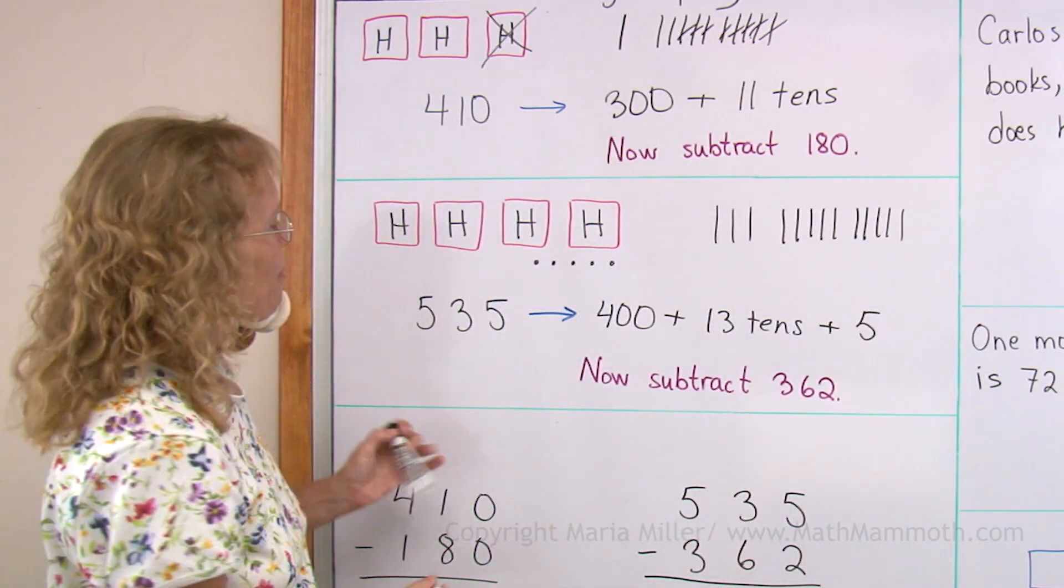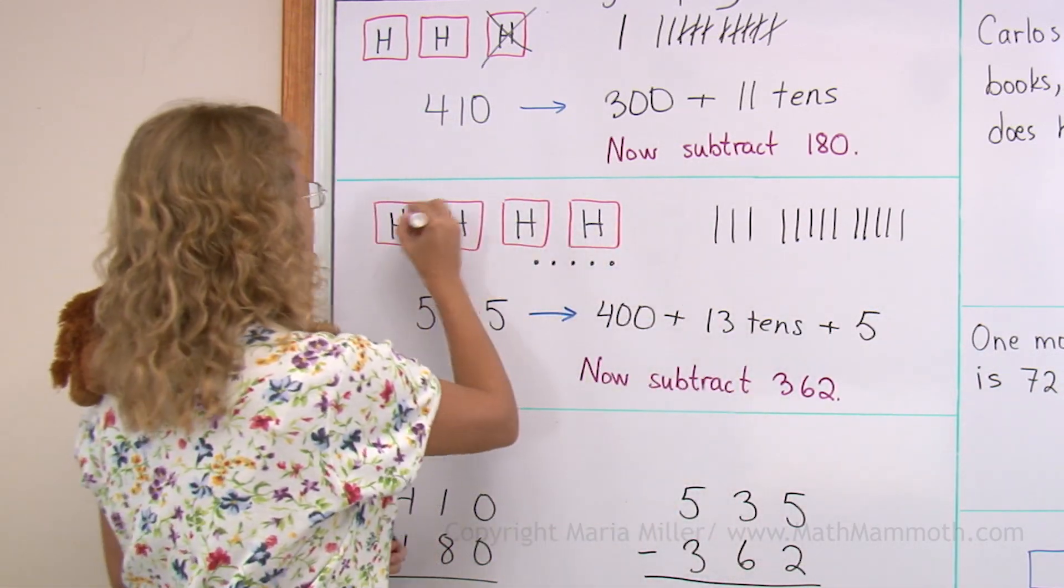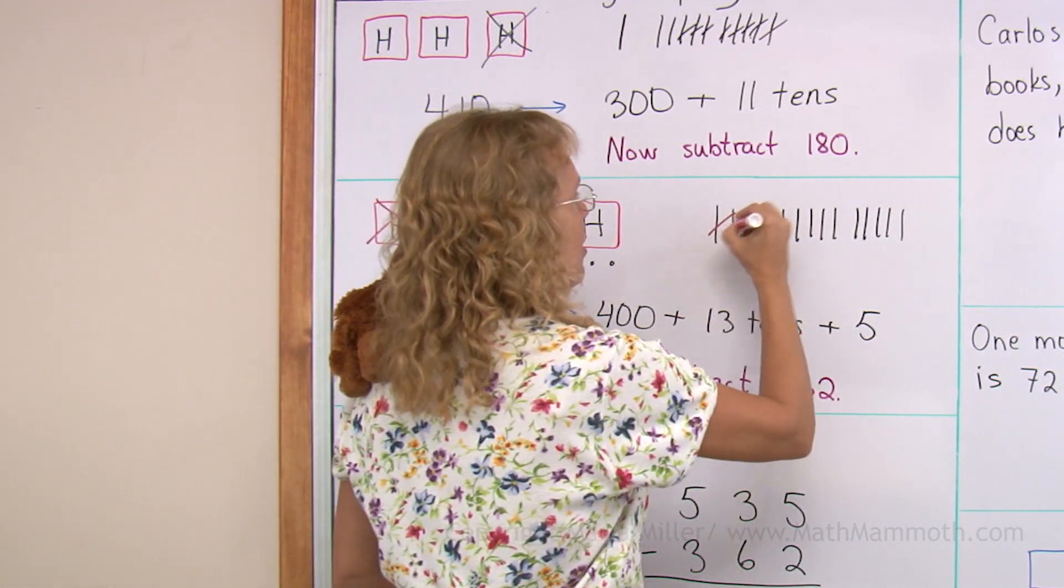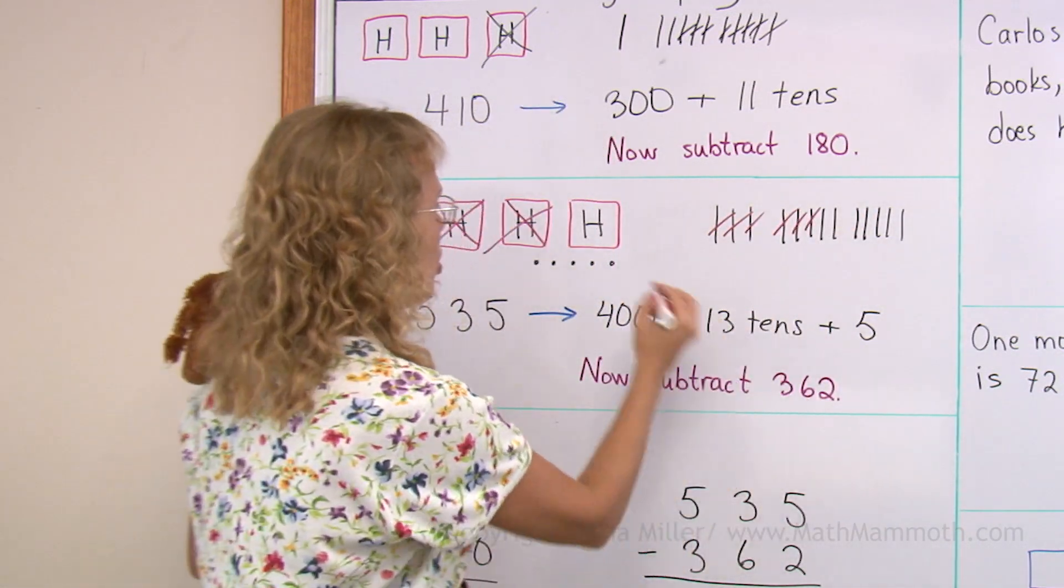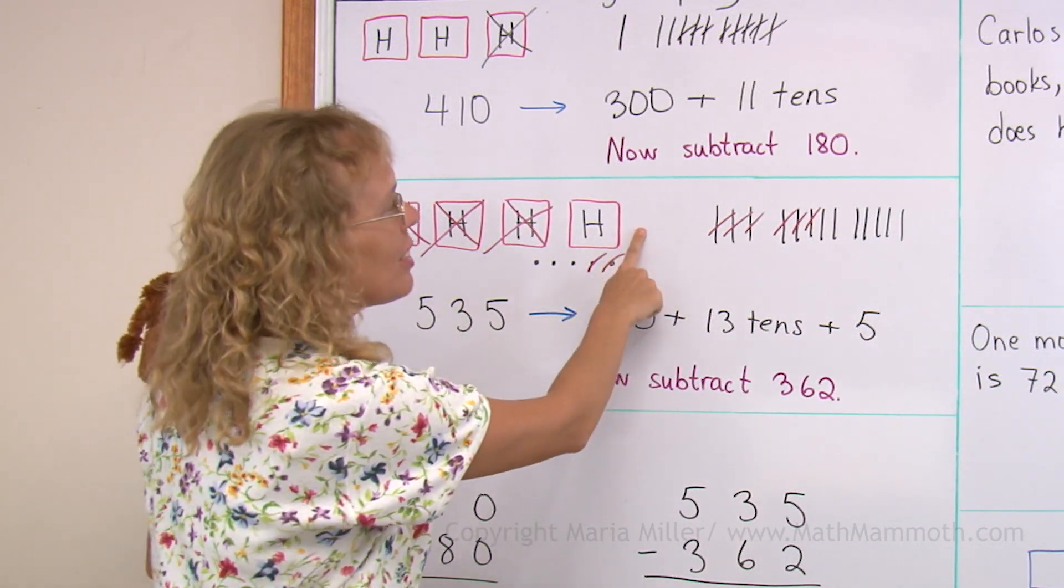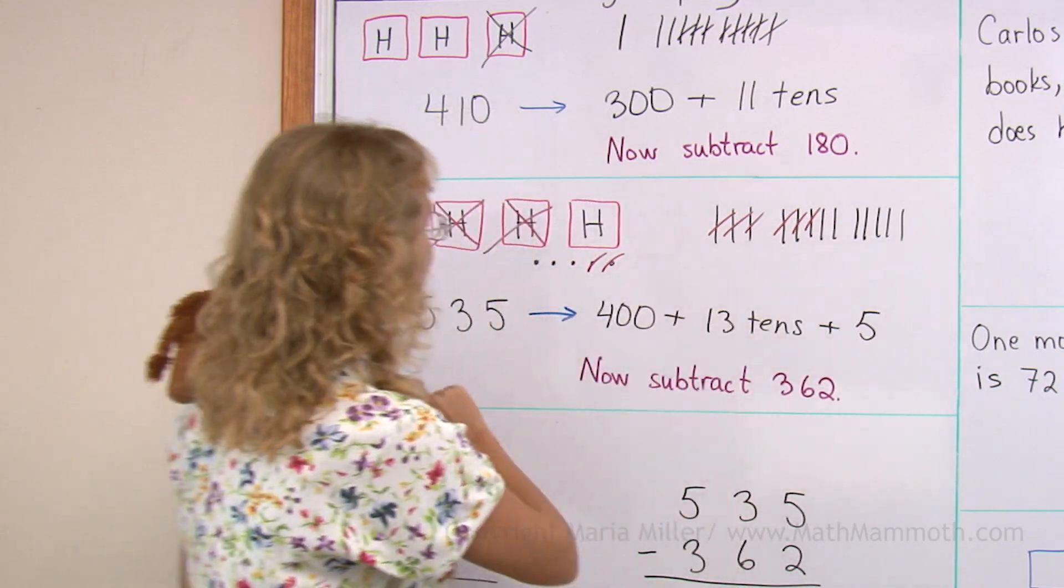And now I subtract. Subtract three hundred, okay? That and that and that. Six tens. One, two, three, four, five, six. And then two. Those. And now we can see what's left is one hundred. And then over here, seven tens and three.